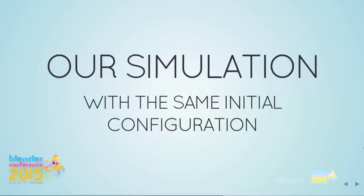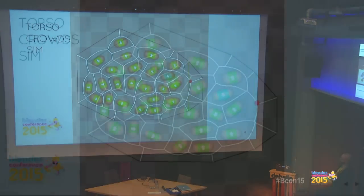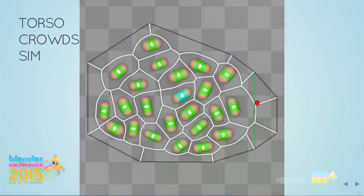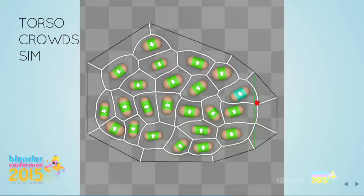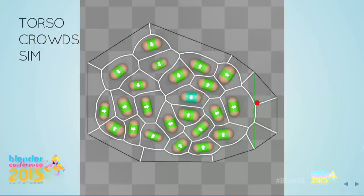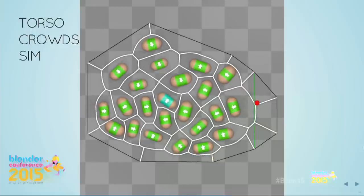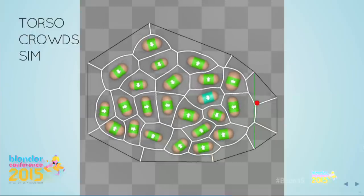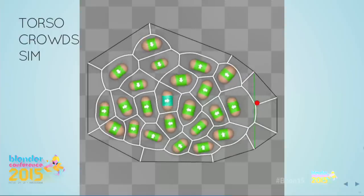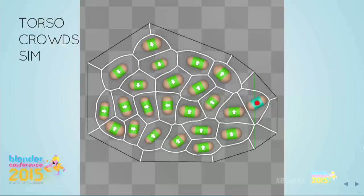We can now take the exact same situation but simulated by our system. One thing you notice is that at the start all the green agents are moving — instantly finding a better place. Our agents did that more than the participants, because participants were told to stand still. But you see that the motion of this simulated agent pretty much resembles the motion of the actual participant.